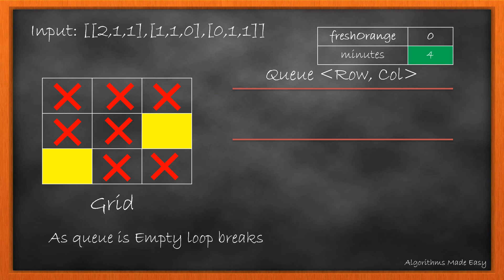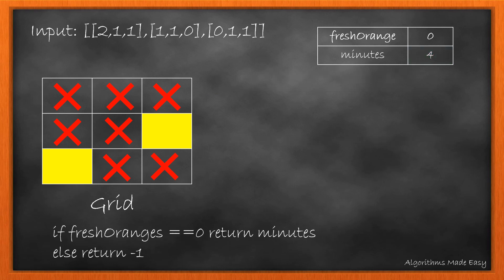As now the queue is empty, we return the result. If the fresh orange is 0, it means it is possible to make all the fresh oranges rotten, so we return minutes. Otherwise we return minus 1. In this case, we return 4.